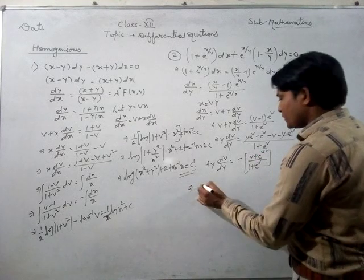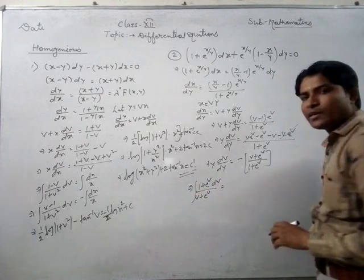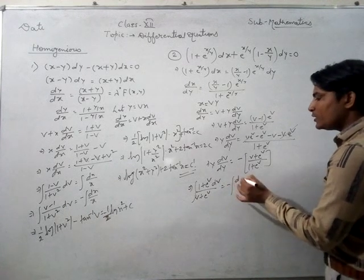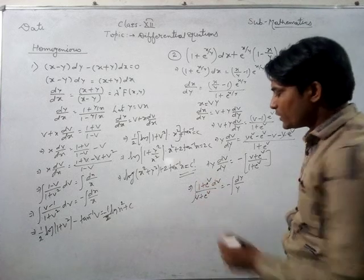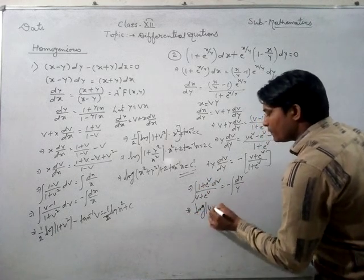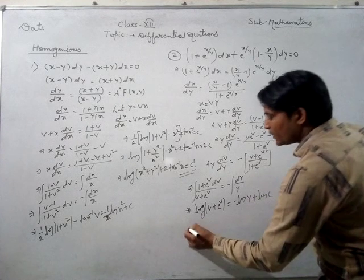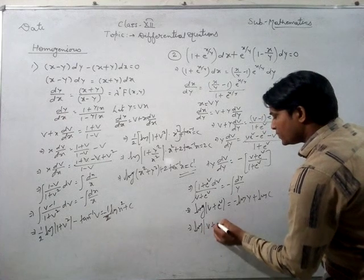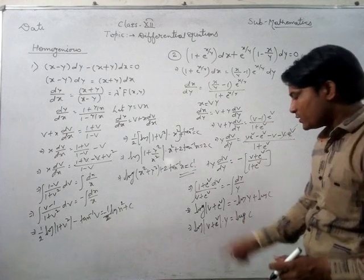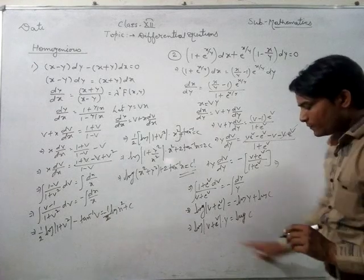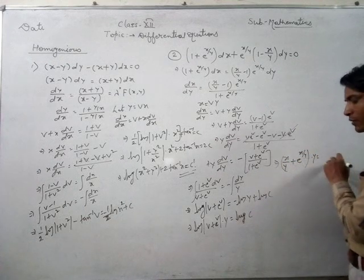After separation, the terms give: (1 plus e to the power v) dv upon (v plus e to the power v) equals minus dy/y. Assuming t equals v plus e to the power v, the term cancels. So the answer is: log(v plus e to the power v) equals minus log(y) plus log(c). Transferring gives log of (v plus e to the power v) times y equals log(c). Logs cancel, and the final answer is: x/y plus e to the power (x/y) times y equals c.